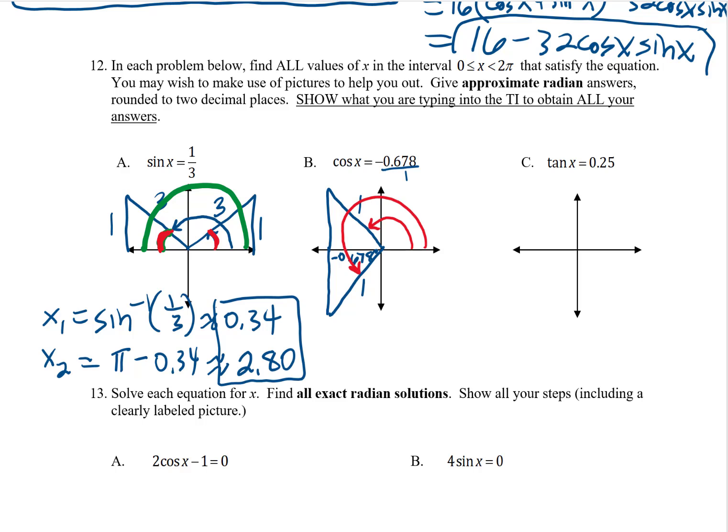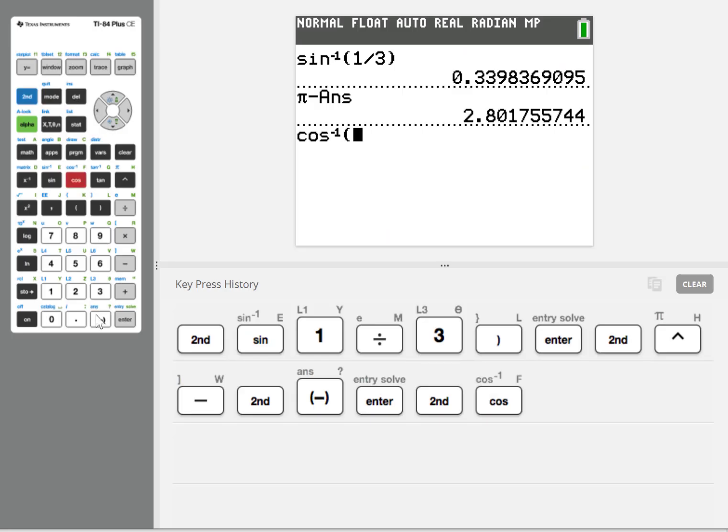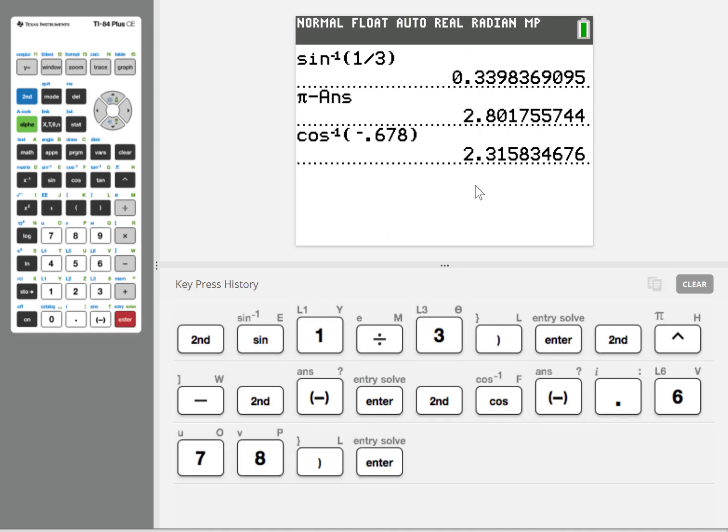How will I get those two angles? Can I use the cosine inverse function? Well, cosine inverse knows about angles between 0 and 180 degrees, or 0 and π, which means it's perfect for finding that smaller angle. Cosine inverse does know about angles in the second quadrant. So to get that first answer, I'll just do cosine inverse of that decimal number. So cosine inverse of negative 0.678 gives me about 2.32 radians.